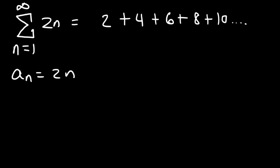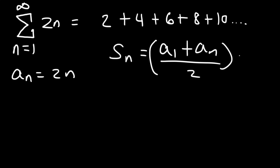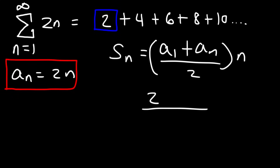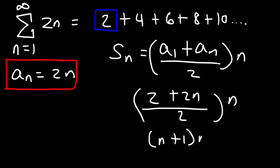Let's confirm that answer. We need to determine a formula s sub n for this series — a general formula for the partial sum up to some value n. We're dealing with an arithmetic sequence, and the partial sum formula is: (a sub 1 plus a sub n) divided by 2, times the number of terms. With a sub 1 = 2 and a sub n = 2n, this gives n times (n plus 1).